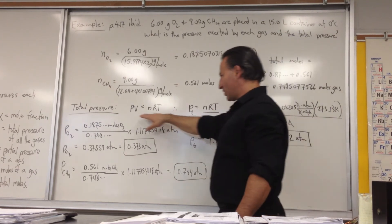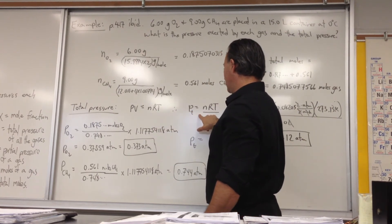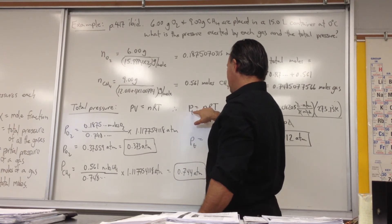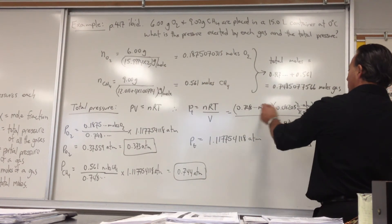We find out the total pressure by using the ideal gas law, PV equals NRT, and rearranging for pressure. Total pressure, P sub T, is equal to NRT over V. So we've simply transposed the variable under the NRT. We enter all the numbers.